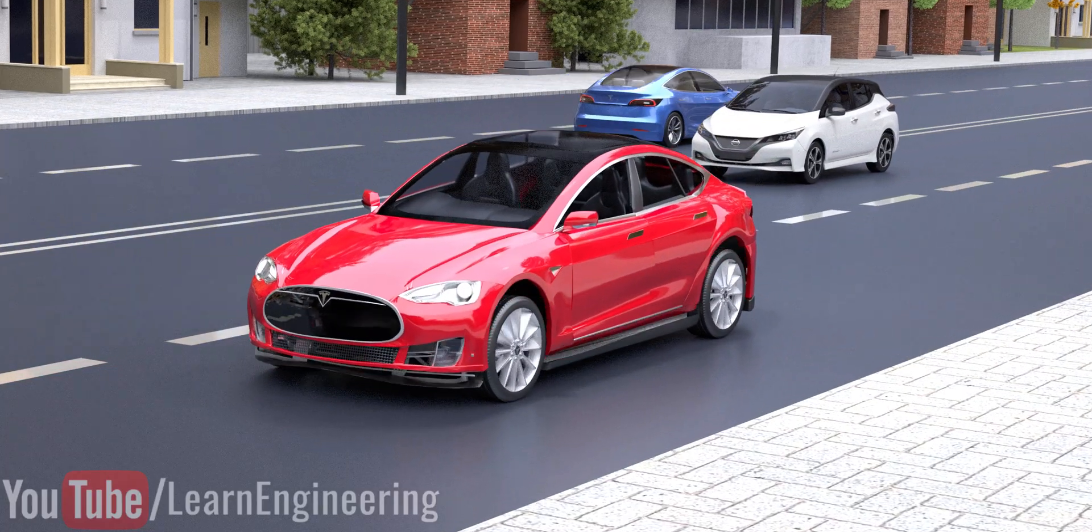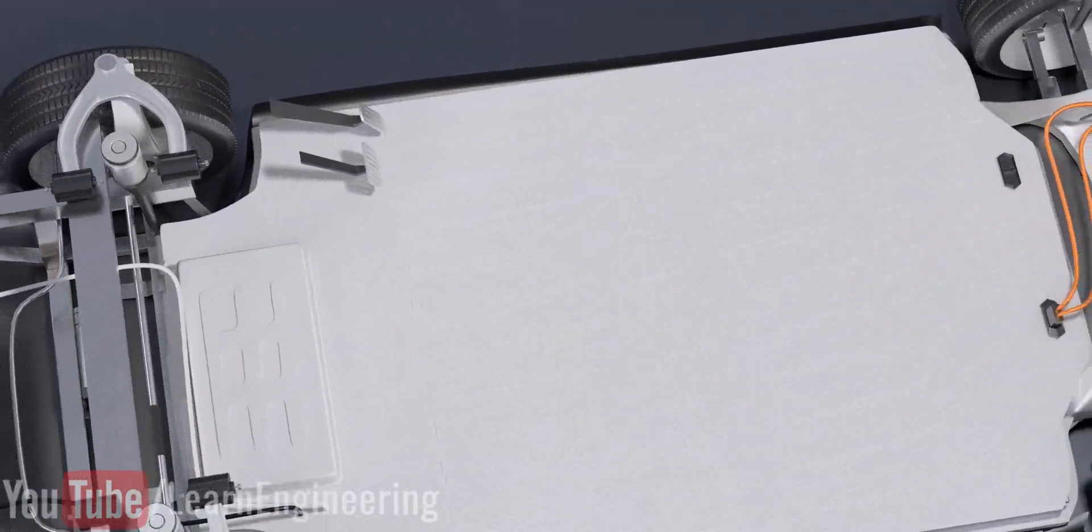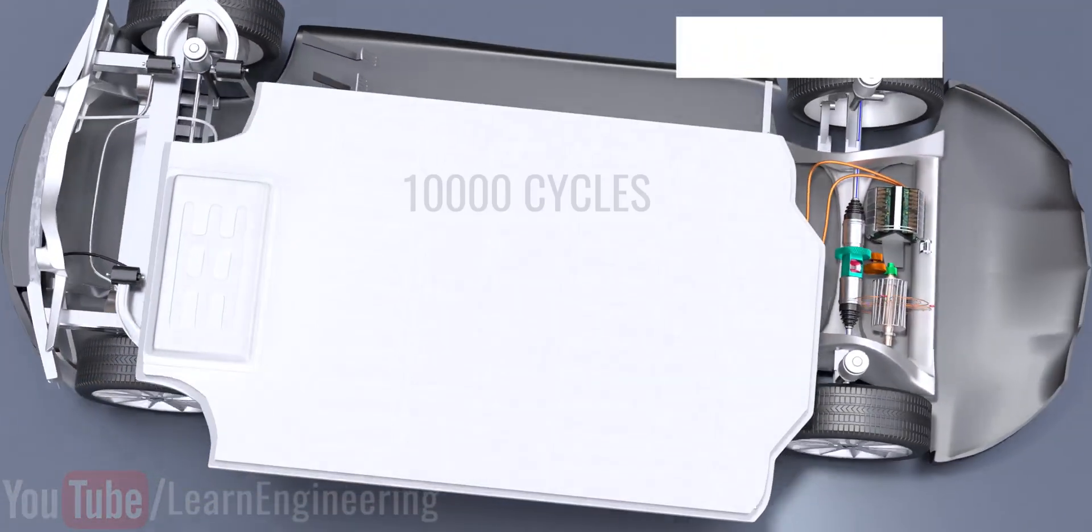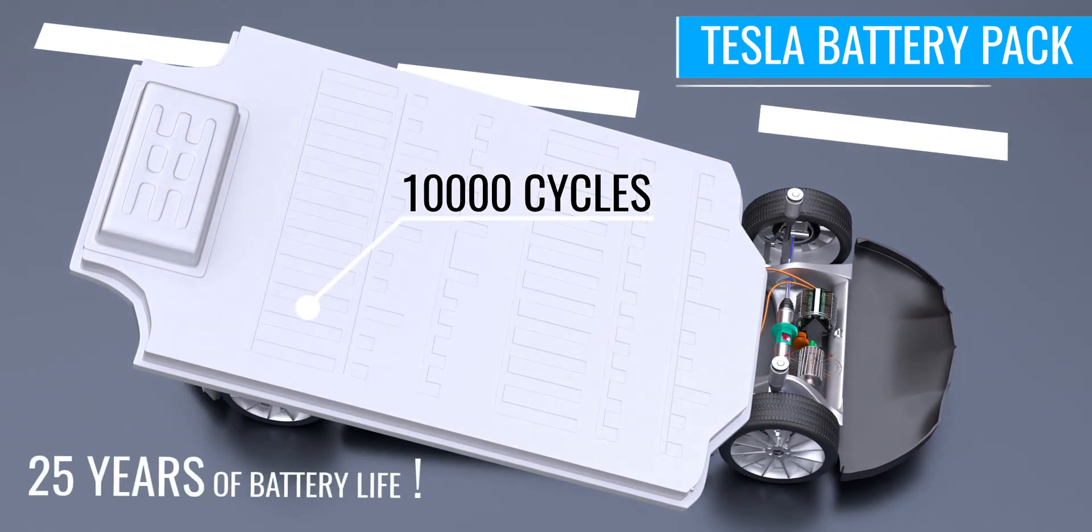Currently, Tesla batteries last for around 3,000 cycles, or around 7 years, and researchers are putting their best efforts into extending this to 10,000 cycles, which is equivalent to 25 years of battery life.